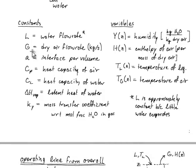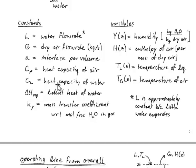G stands for the flow rate of dry air in kilograms per second. Parameter A, as in previous lessons, is the interfacial area per unit volume inside the tower. We also have the heat capacity of air and the heat capacity of water. The heat capacity of air is a fairly strong function of humidity.